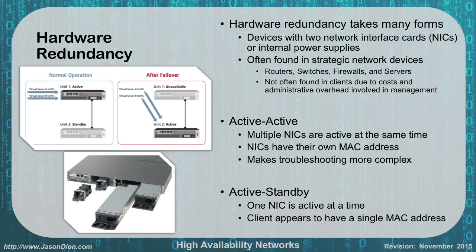When dealing with redundancy, we set it up either as active-active or active-standby. In active-active mode, both network cards or both power supplies are operating simultaneously, each with its own MAC address, which can make troubleshooting harder if one goes down. In active-standby, you have a primary and a backup — when the primary goes down, the backup takes over seamlessly. The clients see only a single MAC address, identifying the network by one hardware address, making it easier to maintain and troubleshoot.